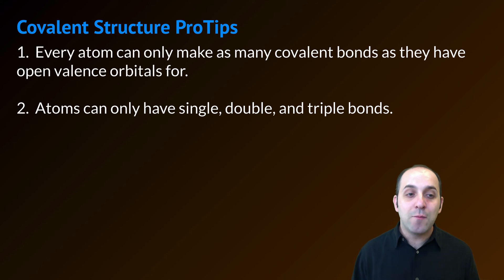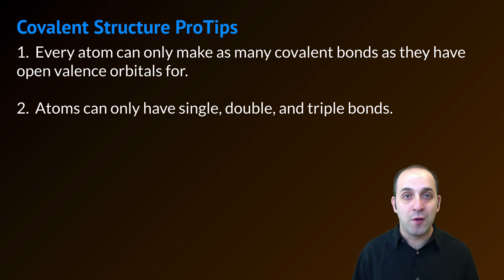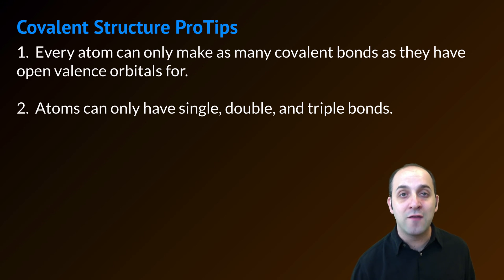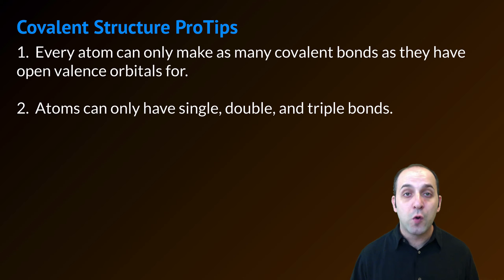Pro tip number two is that atoms can only have single, double, or triple bonds. You cannot make a quadruple covalent bond. An atom can make up to four covalent bonds — for instance with carbon — but those four covalent bonds have to be some combination of single, double, and triple bonds in order to add up to four. The quadruple bond does not exist.